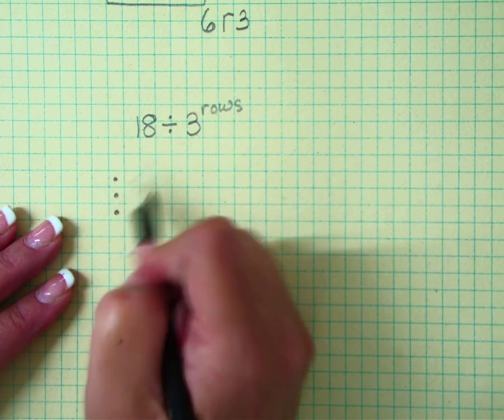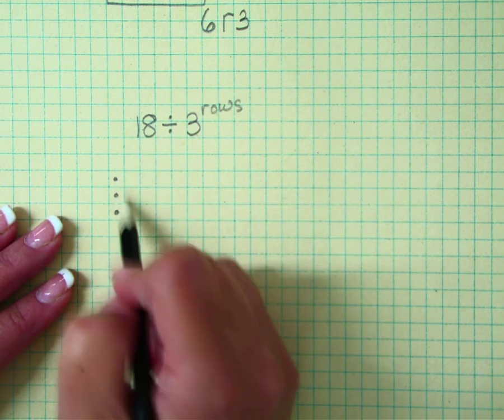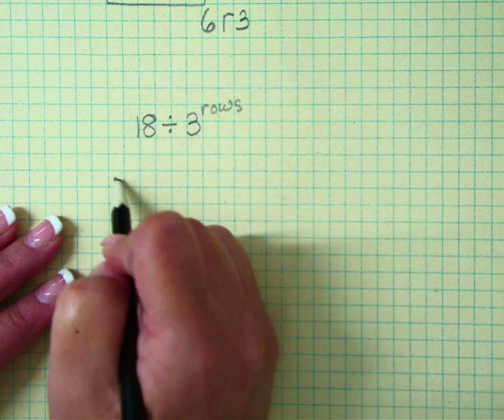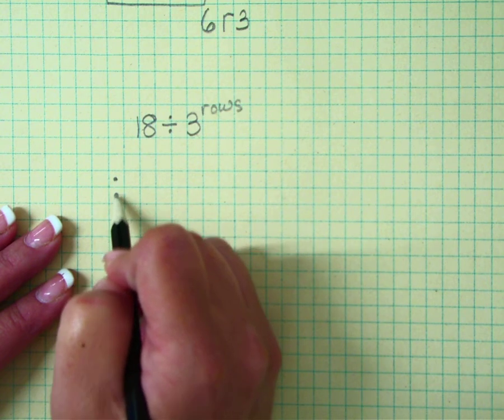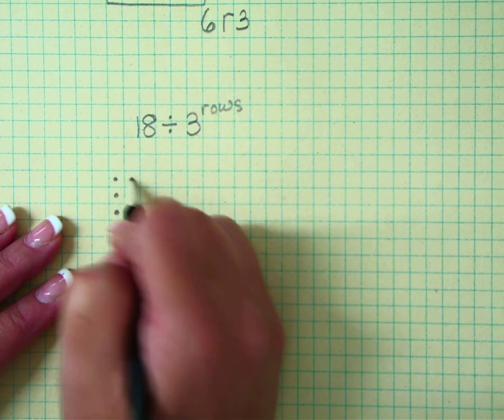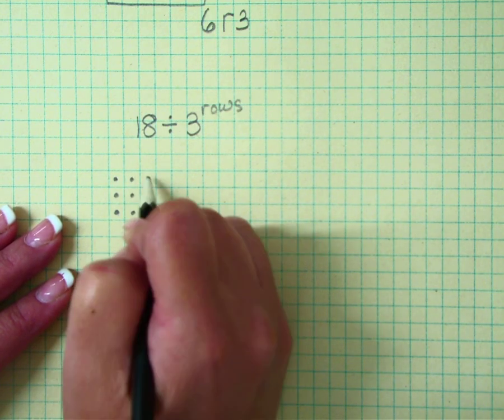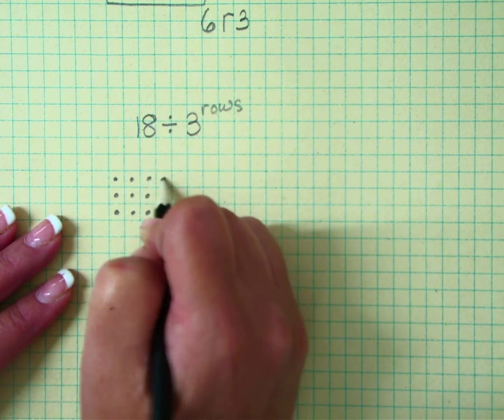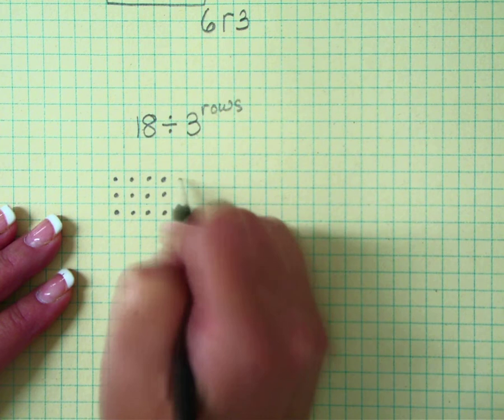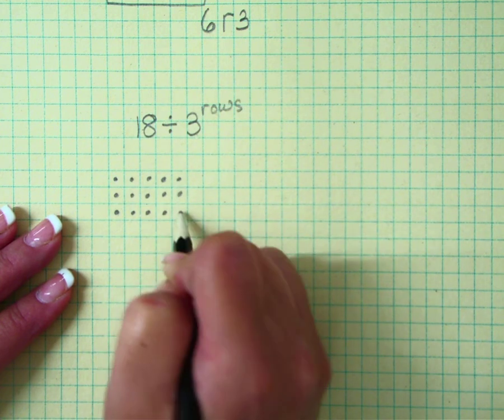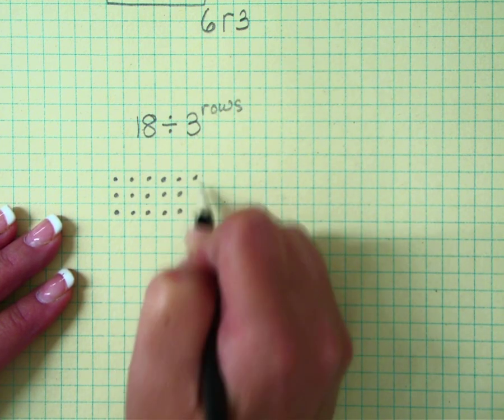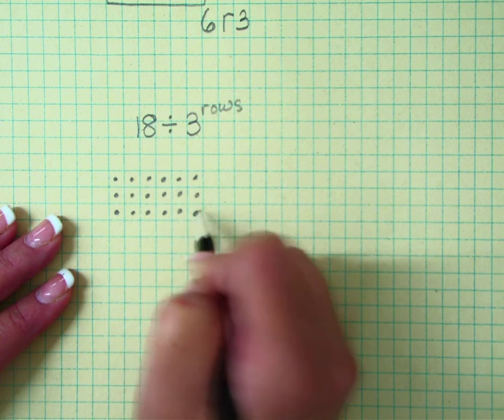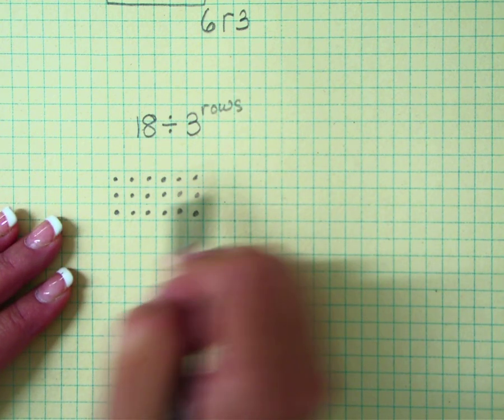So we've already counted out three: 1, 2, 3, 4, 5, 6, 7, 8, 9, 10, 11, 12, 13, 14, 15, 16, 17, 18.